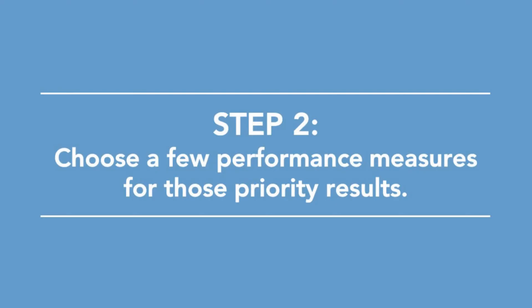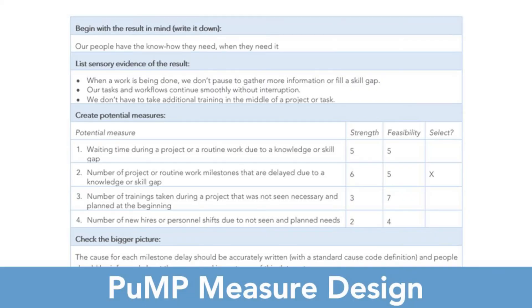Step two is to choose a few performance measures for those priority results. There is no prize for using all the KPIs you can think of to track a particular performance result. In fact there's a penalty — your attention being spread too thin to make any kind of performance improvement, or your attention being pulled away from your unique priorities. So think narrow and deep, and go for truly relevant and insightful performance measures. If you ever get stuck, Pump's measure design technique works a treat — it makes you think about what your result really looks like in tangible terms, and that's the key to finding the right measures.